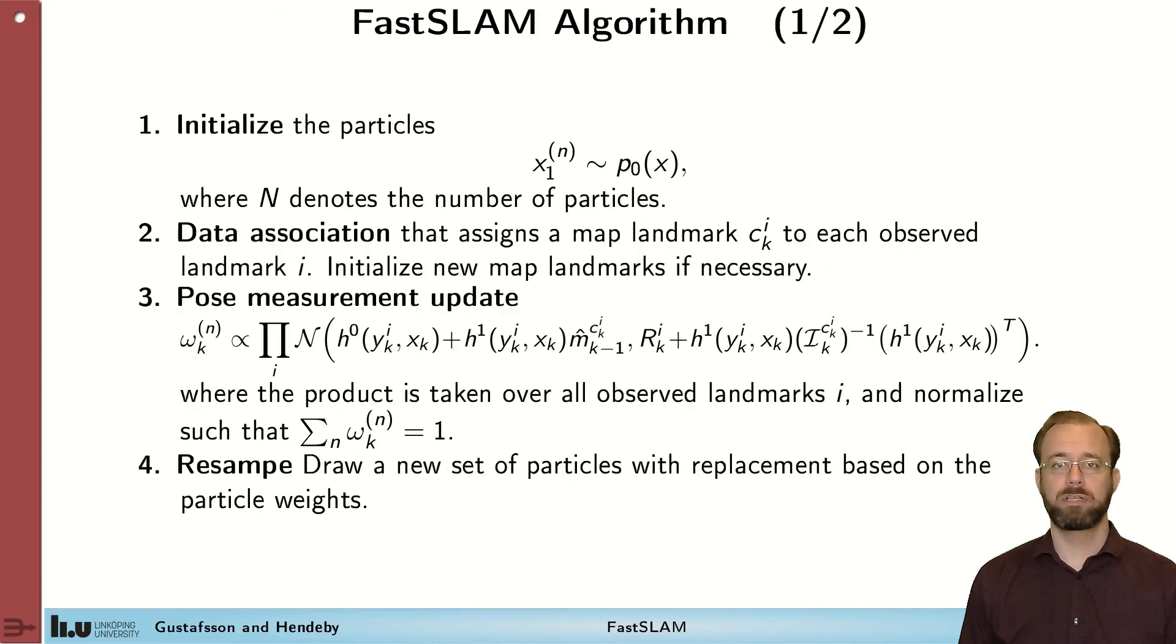So, we are now ready to summarize the FastSLAM algorithm. We start by initializing particles according to some information about the sensor platform. We perform data association. Note that this is done per particle in this case, so it's not as essential to get it right as in the extended Kalman filter SLAM solution.